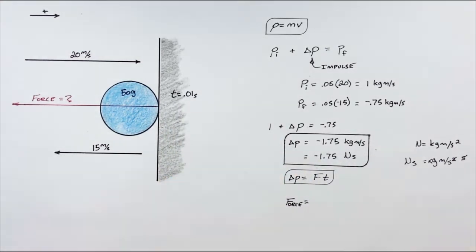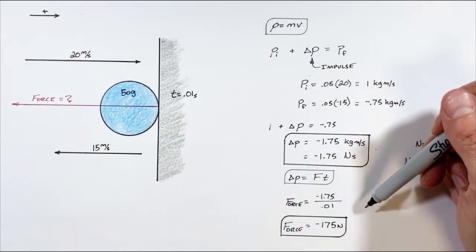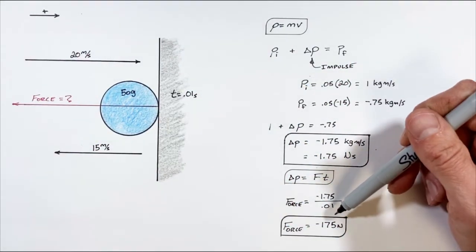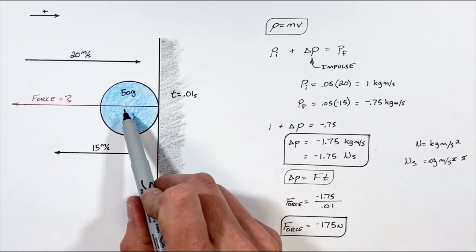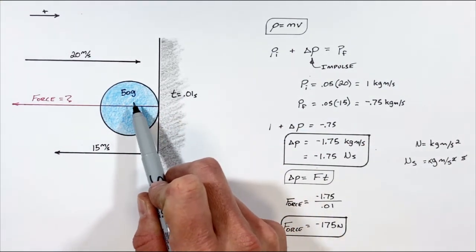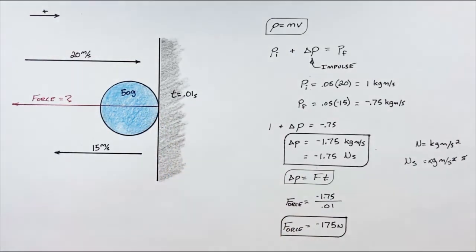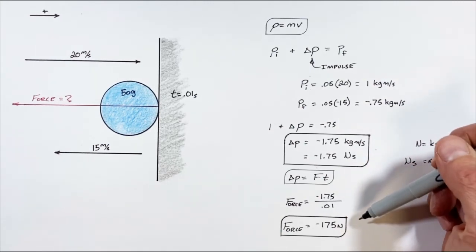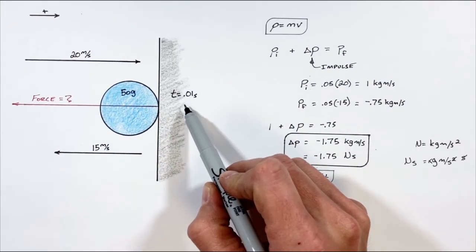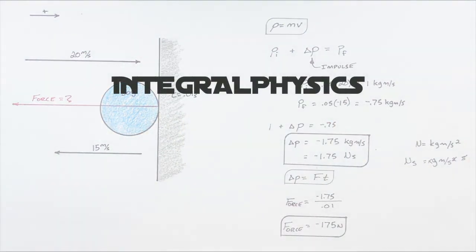We find the force is negative 175 newtons. This force is negative because as the ball collides with the wall, the force by the wall on the ball is to the left—that is to say, it's in the negative direction. So this is how we solve for both the impulse and the force on a ball as it collides with a wall.